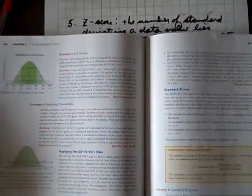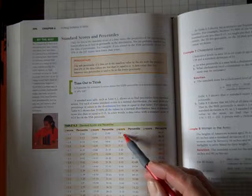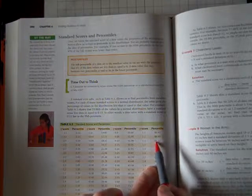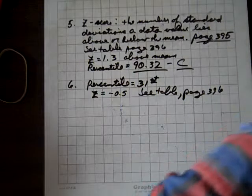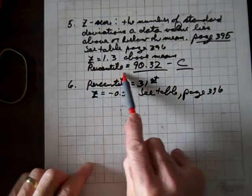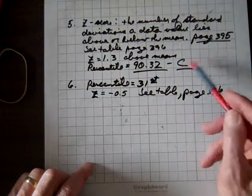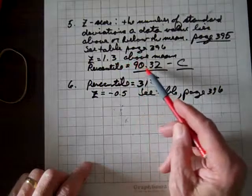And we'll find the score on this table of 1.3 above the mean. So we'll go to 1.3, and the corresponding percentile is 90.32. So that's our percentile, 90.32, and that corresponds to the answer given in C, a Z score of 1.3.